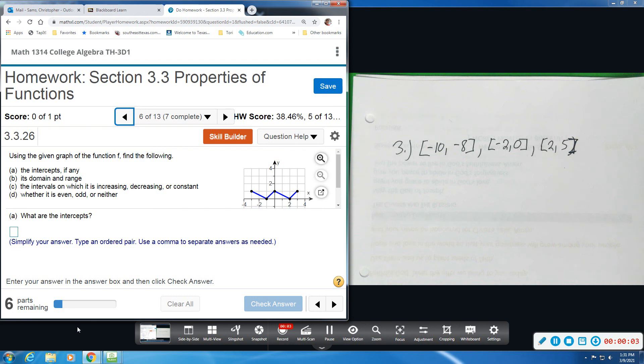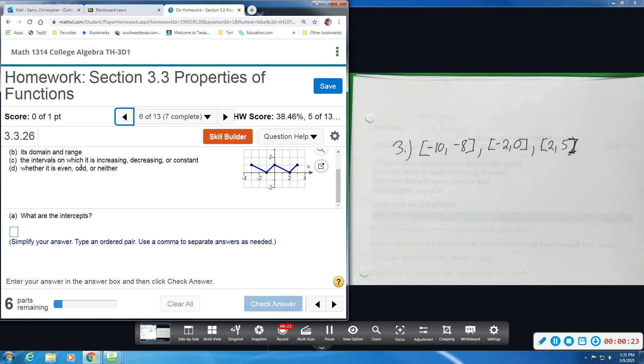Number six, we have a graph, and we want to find several things. We want to find intercepts, the domain and range, intervals on which the function is increasing, decreasing, or constant. And then we want to determine whether it is even, odd, or neither.